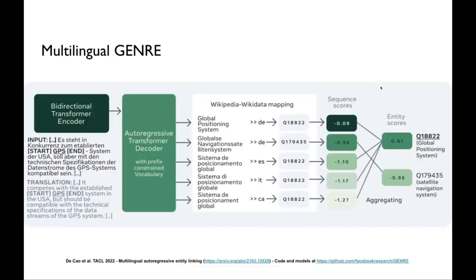We also extended this idea to a multi-modal and multilingual representation. People in the literature often want a single language-agnostic representation for entities, conveying all knowledge in one representation. We did the opposite: let's represent entities in as many languages as we can, so we can leverage as many connections with the input language as possible. We then merge together all generations that refer to a particular entity across different languages.